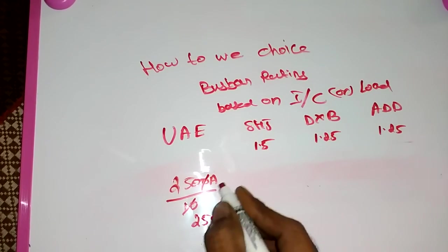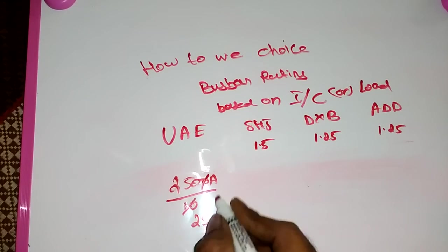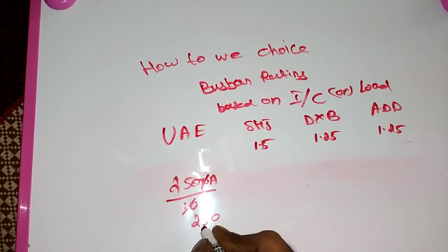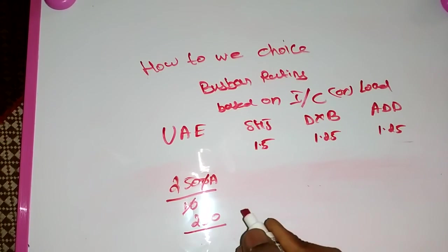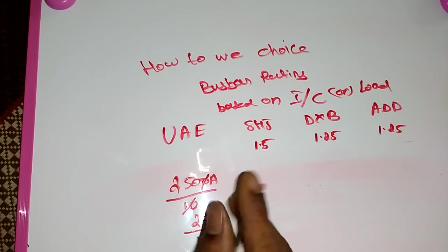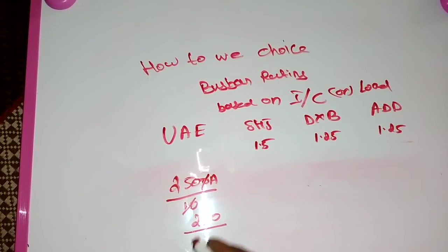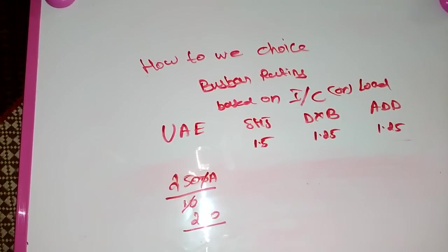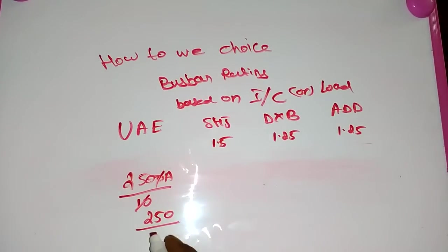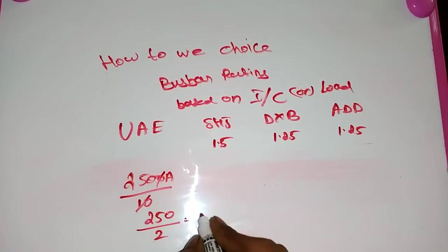Now we got 250. We have 250, but 250 we don't have a busbar rating, so we go for two busbars, that means 80 by 80, two number 80 busbar. 250 divided by 2, what happened? 125.